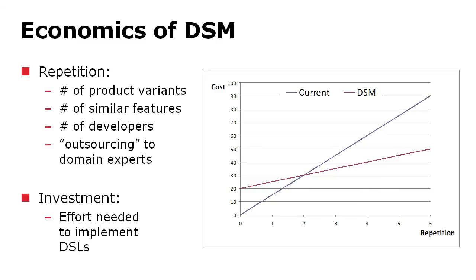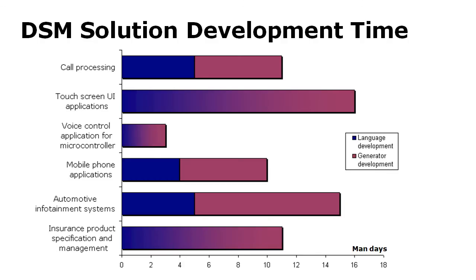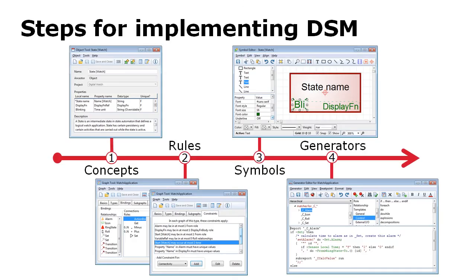The key point is that nothing comes for free — you need to make an investment and build your language and generators first. But as these cases show, it is not a huge investment. Building languages varied from one to three weeks across these four cases, and that is the average detected in other domains as well. One key reason it can be done so efficiently is tooling: in MetaDiPlus, you can build your languages, notations, rules, and generators without doing any programming, so you can build your environments very quickly.